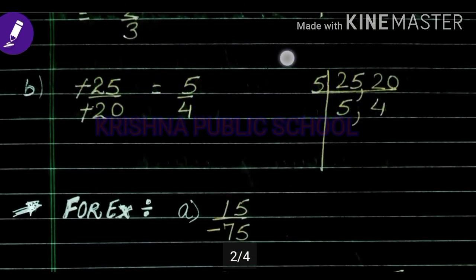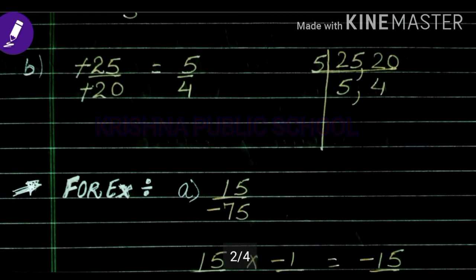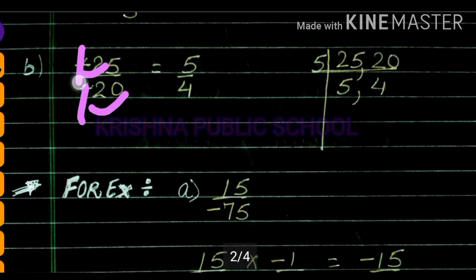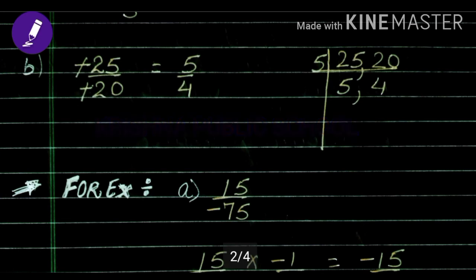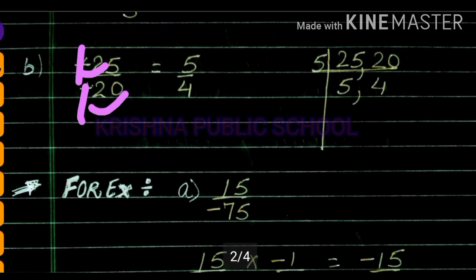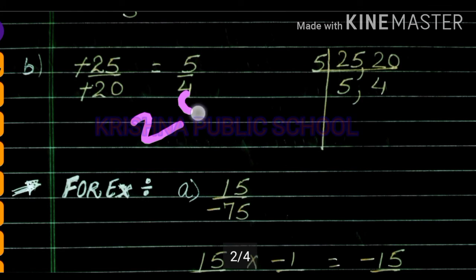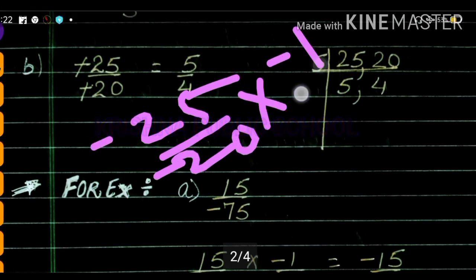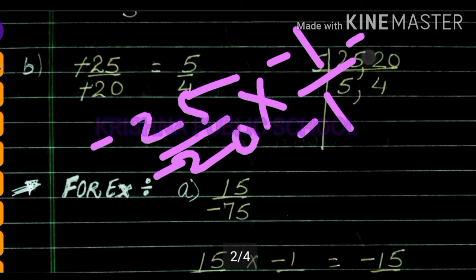Let's take another example. Here we have numerator and denominator both negative: minus 25 upon minus 20. When both signs are negative, we cancel the negative signs — minus into minus gives positive. So we now work with 25 upon 20.